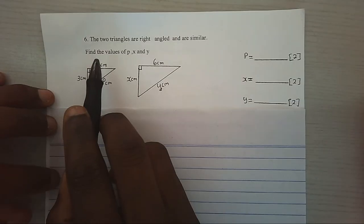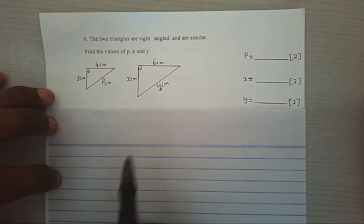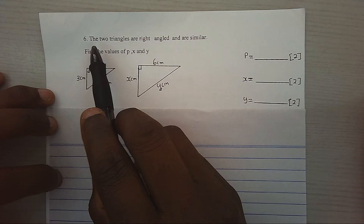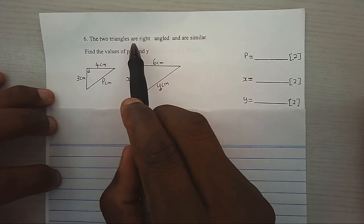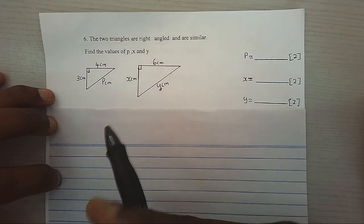Hello, here is our similarity problem which we have solved. The question goes, the two triangles are right angled and they are similar.